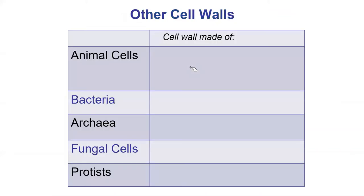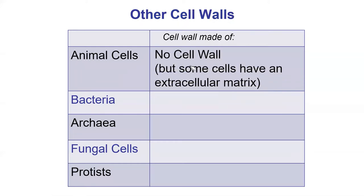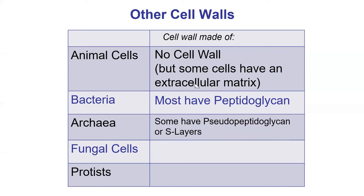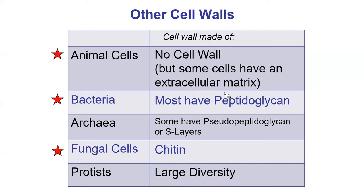There are other types of cell walls worth knowing. Animal cells have no cell wall — they sometimes have an extracellular matrix. Bacterial cells do not have cellulose but have something called peptidoglycan. Archaeal cells do not have peptidoglycan but some have pseudopeptidoglycan. Fungal cells use chitin. Protists have a lot of diversity — some have cell walls, some don't, using quite different materials. You need to know plants, animals, bacteria, and fungal cells.